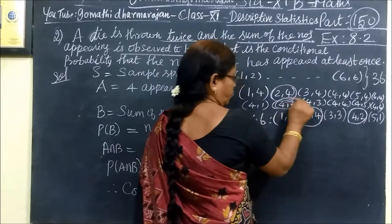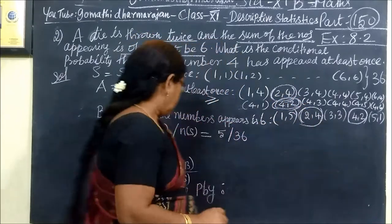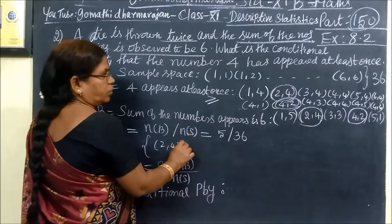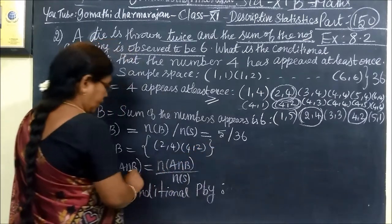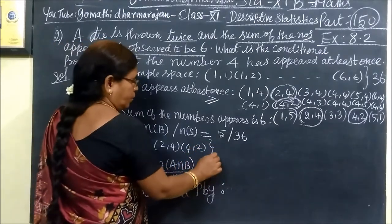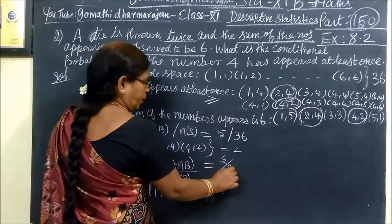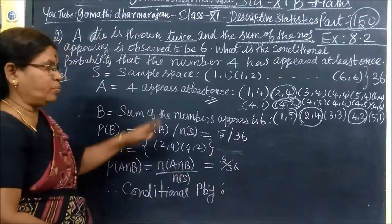The situation is correct: 2,4, then 4,2. Count is 2. A intersection B: 2,4, then 4,2. This is the common. What is A intersection B? This is the common number 2. 2 by 36. 2 by 36, easier than that.